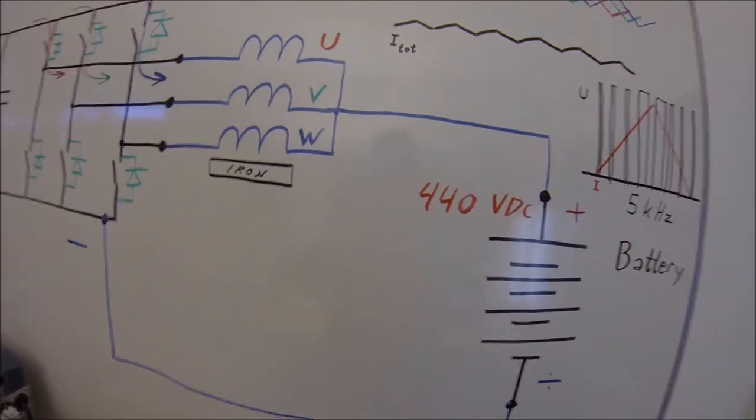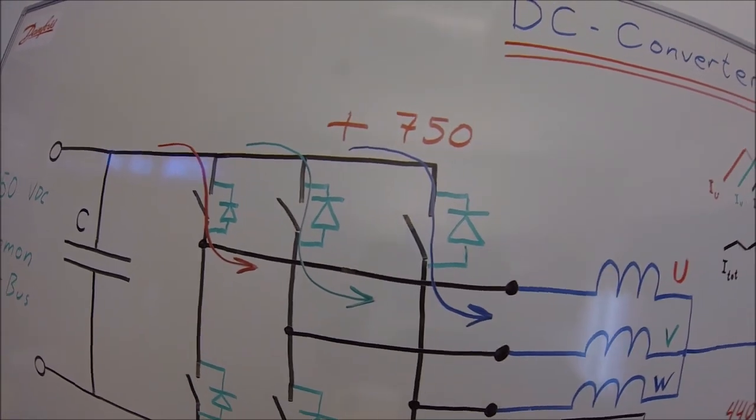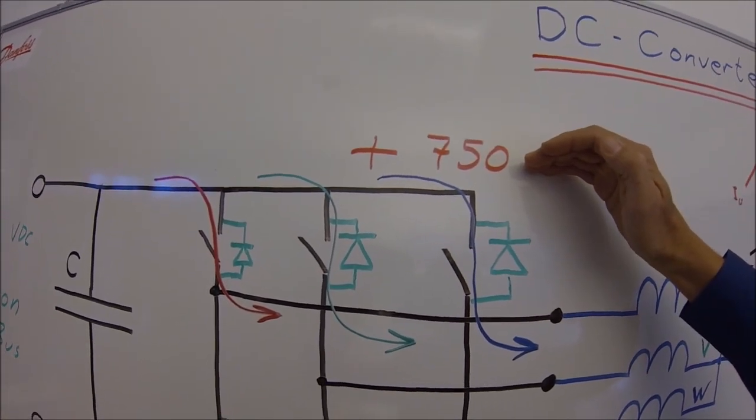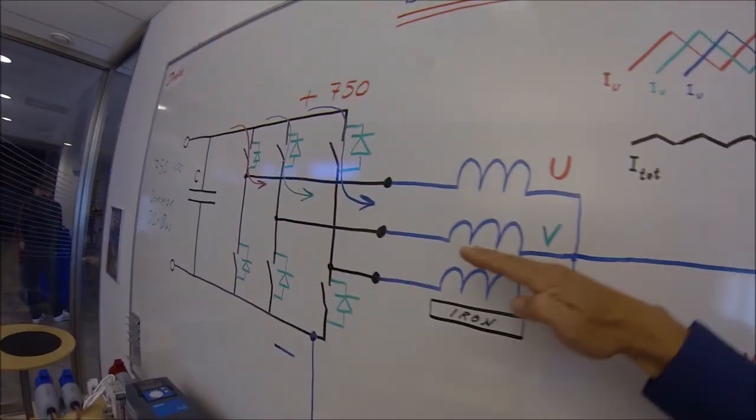What about current flowing from the battery to the common DC bus? The voltage level here is higher than the battery, so this should seem to be a little bit complicated.